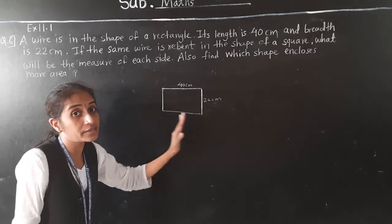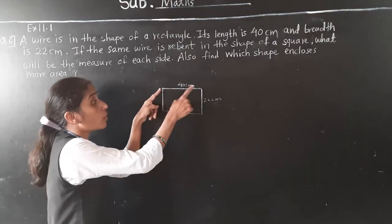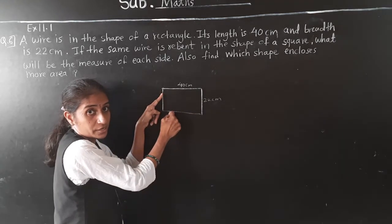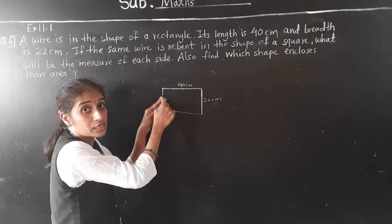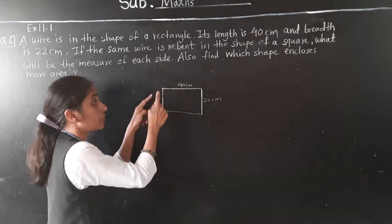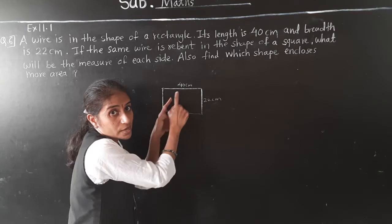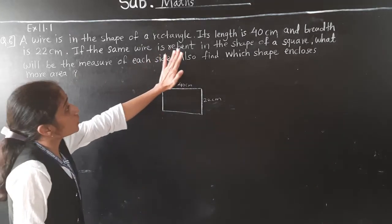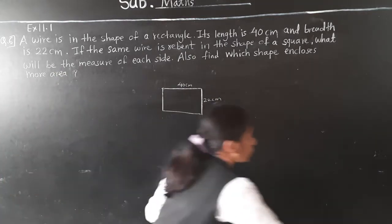The wire is in the shape of a rectangle. Its length and breadth are given, so we can find the perimeter of the rectangle. The wire is then rebent into the shape of a square, and we need to find the measure of each side. Also find which shape encloses more area.